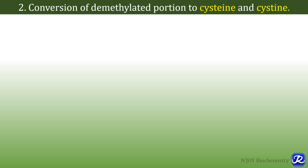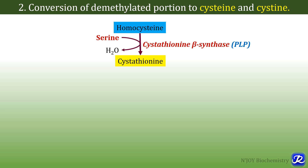The second step of methionine metabolism is conversion of the demethylated portion to cysteine and cystine. Homocysteine combines with serine to form cystathionine, catalyzed by cystathionine beta synthase, a pyridoxal phosphate (vitamin B6) dependent enzyme. If this enzyme is defective, homocysteine cannot be converted to cysteine, leading to increased homocysteine excreted in the urine — a condition called homocysteinuria.